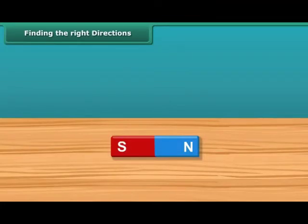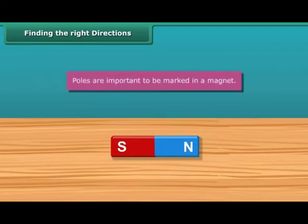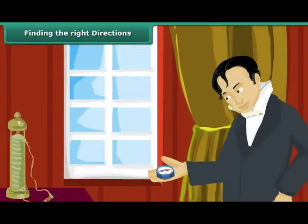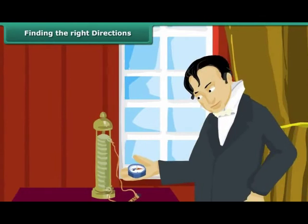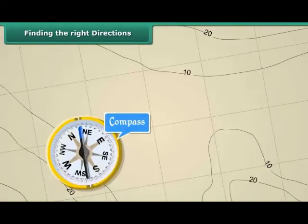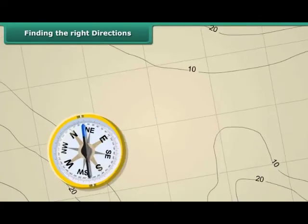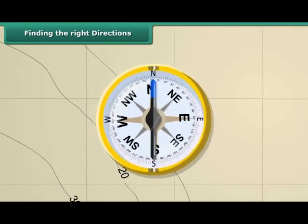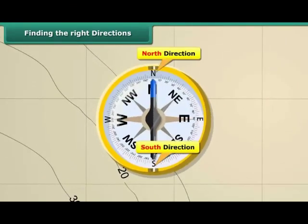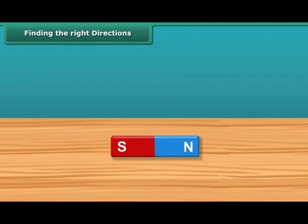Finding the right directions. Once you know about the poles of a magnet, you should also be able to mark the location of the poles. Let us now look at why poles are important to be marked in a magnet. We all know that to find directions, we use a compass. This compass has a needle that keeps moving in all directions, but when steadied, always points to the north. This helps us in finding directions accurately. This is why we need to mark the poles of a magnet.